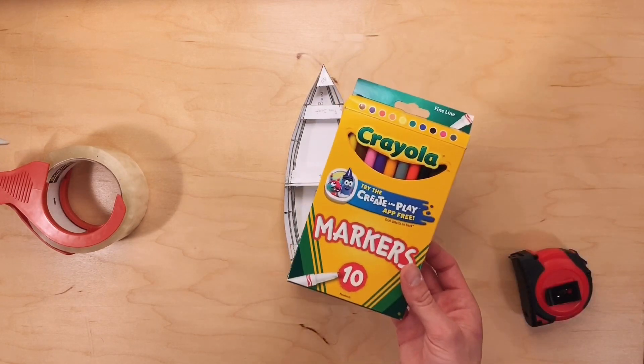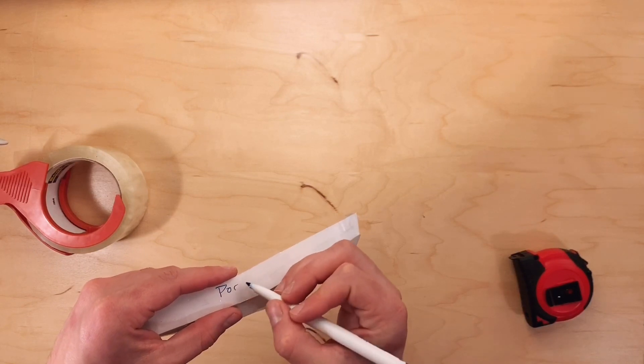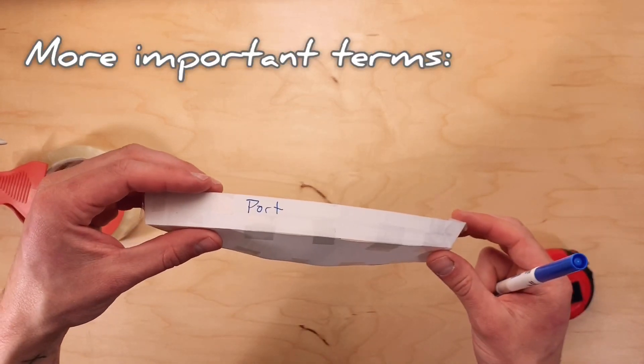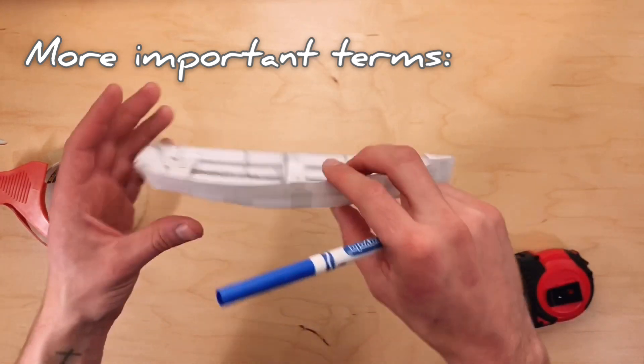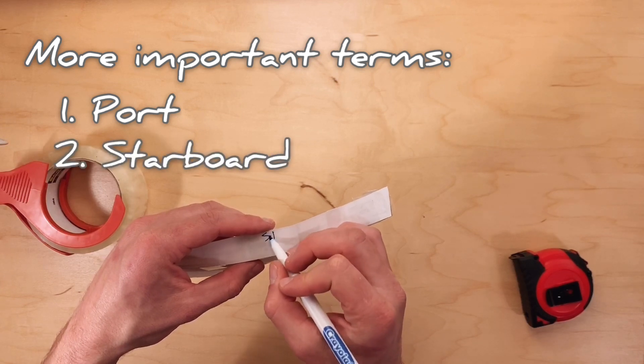Using markers, you can decorate your boat however you would like. I'm labeling my boat with a few more terms that are important when boating. The left side of the boat in relation to the bow is called port. The right side of the boat in relation to the bow is called starboard.